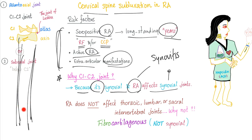Question: Does osteoarthritis affect the lumbar vertebra? Yes — because osteoarthritis is biomechanical; it affects weight-bearing joints. Therefore it affects the lumbar because it's carrying your entire body weight. Question two: Does rheumatoid arthritis affect the lumbar? No — because rheumatoid has nothing to do with weight-bearing. Rheumatoid is all about autoantibodies causing synovial inflammation. Synovial. Got it?